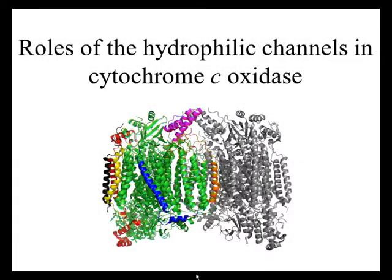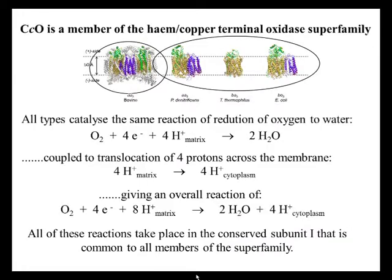I'm going to talk on the roles of hydrophilic channels in cytochrome C oxidase, which is a large respiratory membrane protein. This enzyme is a member of a huge superfamily of oxidases. There are the very large mitochondrial forms, such as the bovine form shown here, and a whole range of different bacterial forms which are homologous to the mitochondrial enzyme but are much smaller.